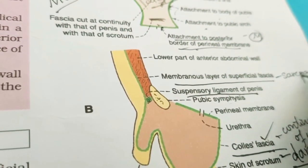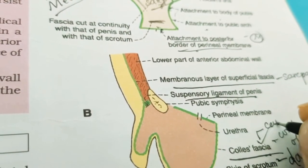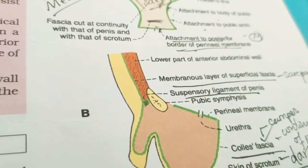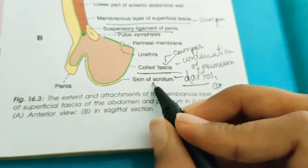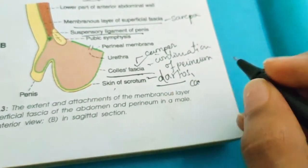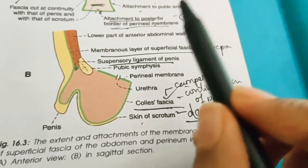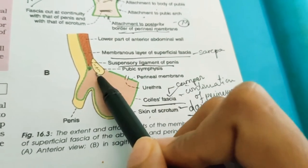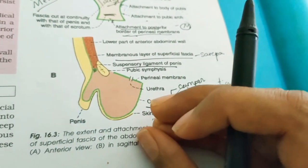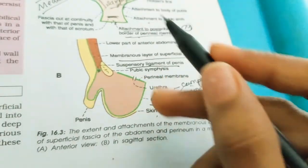To summarize: Camper's fascia forms Colles' fascia and the dartos muscle. Scarpa's fascia forms the membranous layer of the superficial fascia, which thickens to form the suspensory ligament of the penis. These are the key structures formed by the superficial fatty layer and the membranous layer.